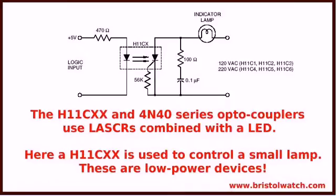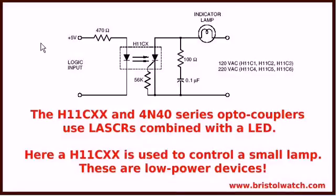Here we're seeing a light-activated silicon controlled rectifier contained within an optocoupler that includes a light-emitting diode. This gives us the advantage of connecting a higher-voltage AC circuit with a low-voltage microcontroller such as Arduino. The H11CXX and 4N40 series optocouplers use light-activated SCRs combined with an LED. Here, we're using it to control a small lamp.